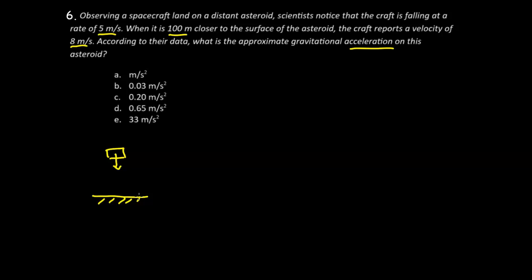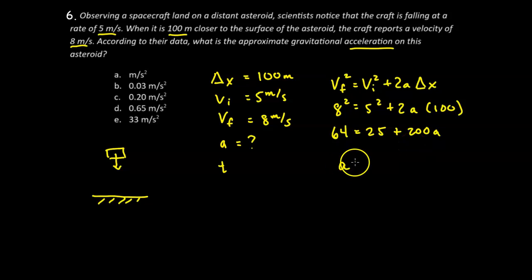So we have a spacecraft that is falling towards the surface of this asteroid. And we're going to first start with our variables chart. So delta X, VI, VF, A, T. And we're looking for the acceleration. And we know that it's falling at a rate of 5 meters per second. 5 meters per second. When it is 100 meters closer to the surface, the craft reports a velocity of 8. So it goes from 5 to 8 meters per second. And this happens over a distance of 100 meters. So using my kinematics equation chart, which I showed you earlier, we can figure out the equation we would use here is the one without the T. So it's going to be V final squared equals V initial squared plus 2A delta X. So now I'm going to substitute. If we solve for A, we get that A is 0.20 meters per second squared. And so the answer here is going to be answer C, 0.2 meters per second squared.